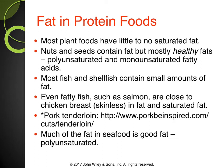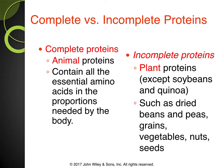Most plant foods have little to no saturated fat, which is a benefit of increasing plant foods in our diet. Nuts and seeds contain fat, but it's mostly healthy polyunsaturated and monounsaturated fatty acids. Most fish and shellfish contain small amounts of fat. Even fatty fish like salmon are close to skinless chicken breast in fat and saturated fat. Pork tenderloin is actually a lean protein. Animal proteins typically contain all the essential amino acids — they're referred to as complete proteins. Plant sources of protein are considered incomplete, but that's okay because you can mix and match combinations to get a complete protein.